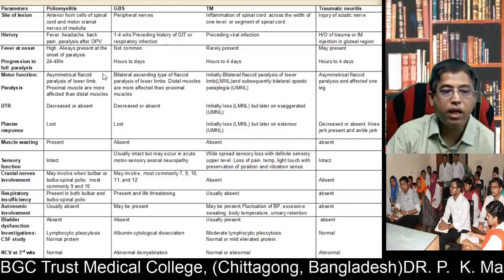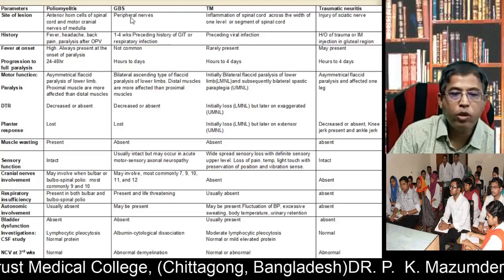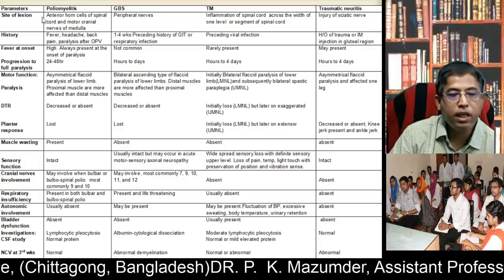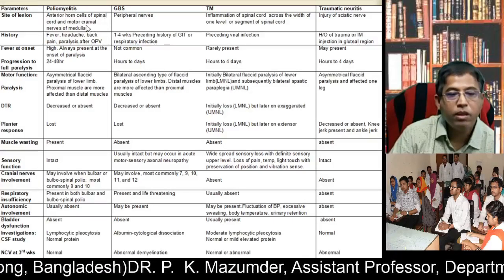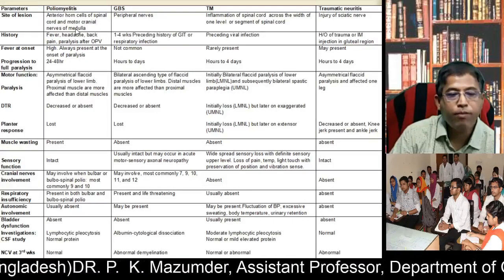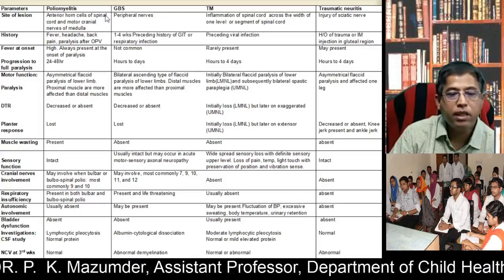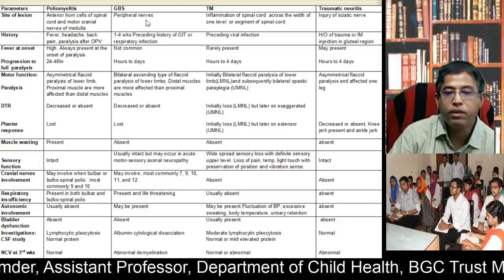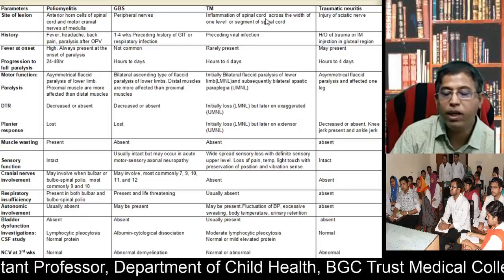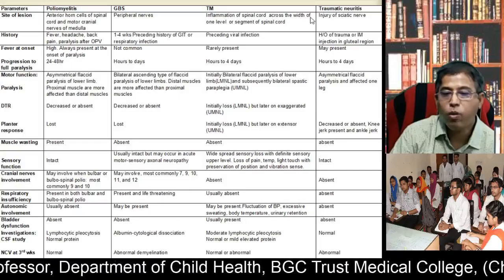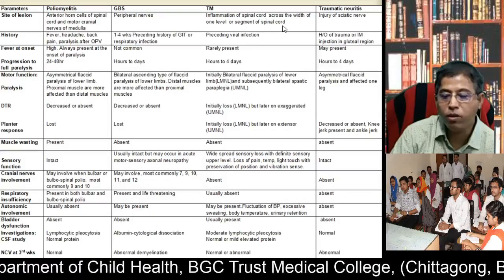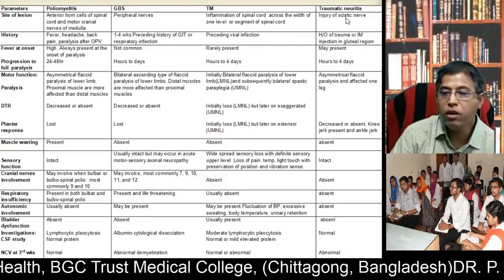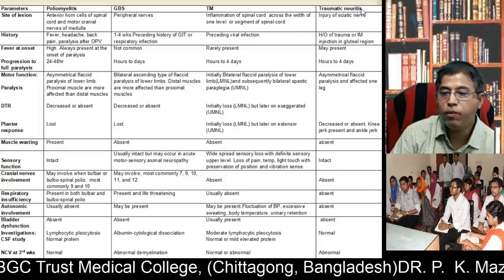Now the differentiation between poliomyelitis, Guillain-Barré syndrome, transverse myelitis, and traumatic neuritis. Regarding site of lesion: in poliomyelitis it is the anterior horn cells of the spinal cord and motor cranial nerve nuclei of the medulla oblongata; in Guillain-Barré syndrome it is the peripheral nerves; in transverse myelitis there is inflammation of the spinal cord across the width of one level or segment; and in traumatic neuritis it is injury of the sciatic nerve.